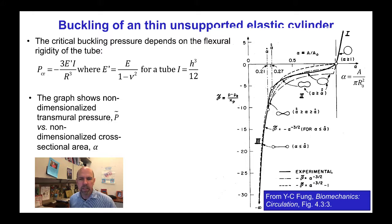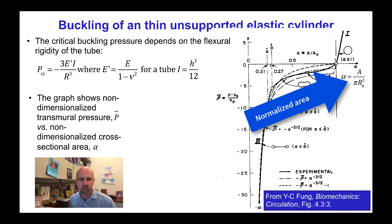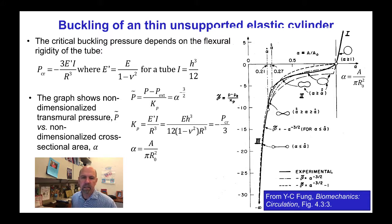Here we see a graph of pressure versus cross-sectional area in a collapsible tube, where the pressure variable p̃ has been normalized and the cross-sectional area variable α has also been normalized, such that p̃ is the difference between the pressure inside the vessel and the external pressure p_x, divided by k_p.